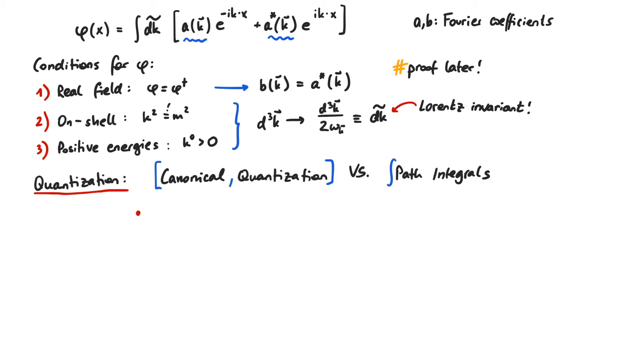Canonical quantization means that two conjugated degrees of freedom fulfill a commutation relation. In non-relativistic quantum mechanics this was the commutator xp, which is equal to i h-bar. And for our quantum field theory we would need a commutator between phi and some momentum field and set it equal to i h-bar.